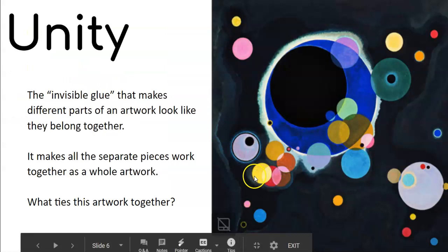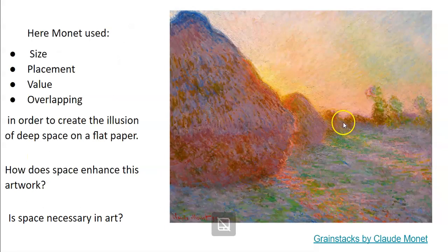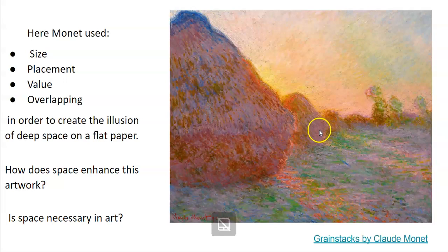Monet changes the size of the haystacks — the big ones appear to be closer to us, and the smaller ones appear to be far away. Even though they're all on the same flat paper, the change in size helps create that illusion of space. He also changed the placement: as objects are placed higher, they appear deeper. The one placed right on that horizon line looks the farthest away. The value changes too — the foreground one has dark value, while the others get lighter and harder to see. And they are each overlapping: one is in front, the next is behind it but in front of another, and the last one is behind all of them.